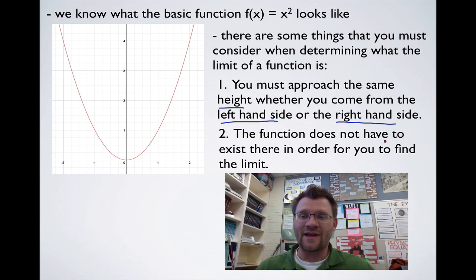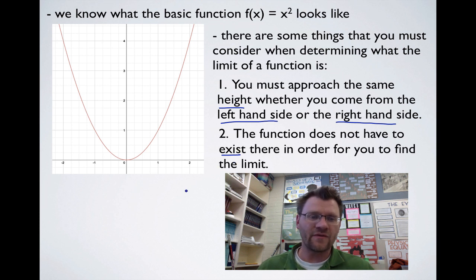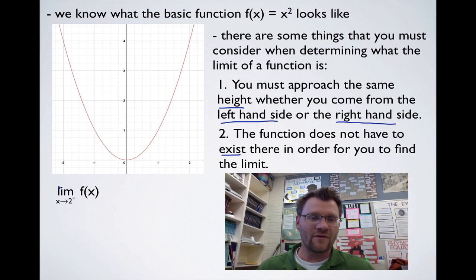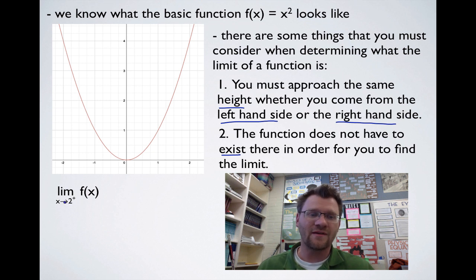Second, the function doesn't actually have to exist at that point in order for you to find the limit there. Now let's look at some notation. This is how we write limits: we have 'lim' for limit, and underneath we put x approaching whatever value we're talking about. In this case, we're going to find the limit of f(x), which is our parabola, as x approaches 2.